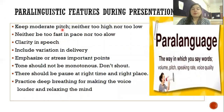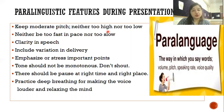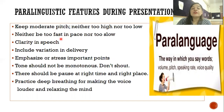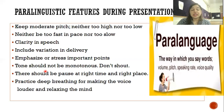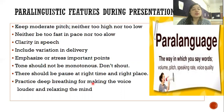Paralinguistic features refer to tone and voice — the kind of modulation you use while speaking. Keep a moderate pitch — neither too high nor too low, not shrieking and not so soft that people cannot hear you. Neither be too fast nor too slow in pace. Maintain clarity in speech and include variation in delivery. Emphasize or stress important points. Tone should not be monotonous. Do not shout. There should be a pause at the right time and right place. Practice deep breathing to make the voice louder and to relax the mind.